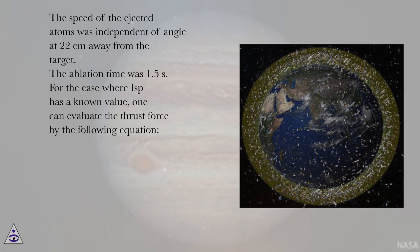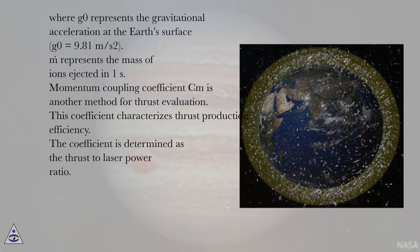For the case where ISP has a known value, one can evaluate the thrust force by the following equation, where g0 represents the gravitational acceleration at the Earth's surface (g0 = 9.81 m/s²).